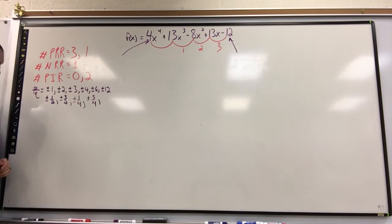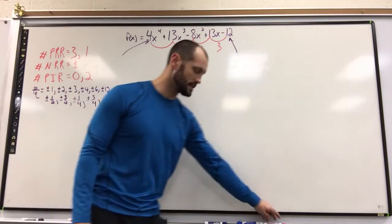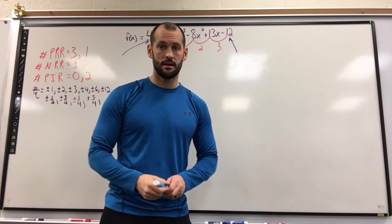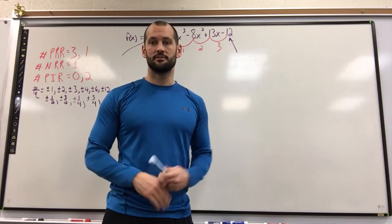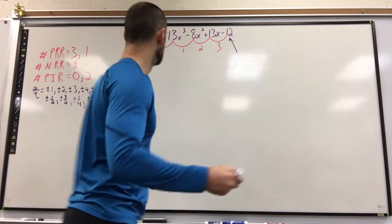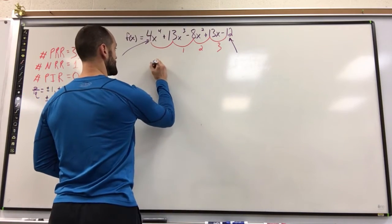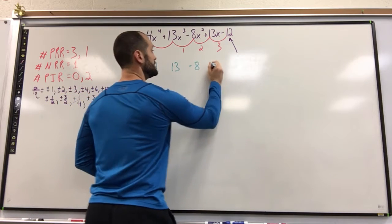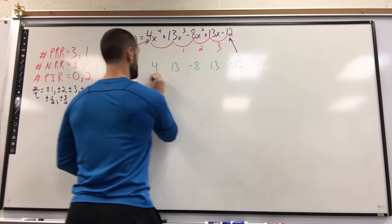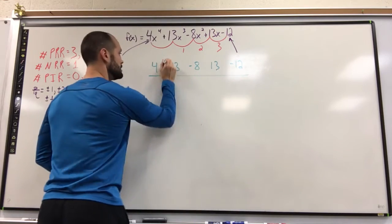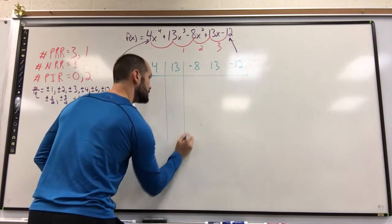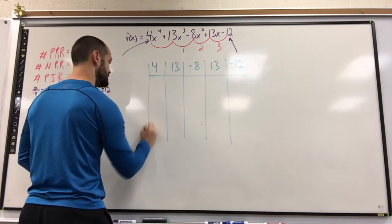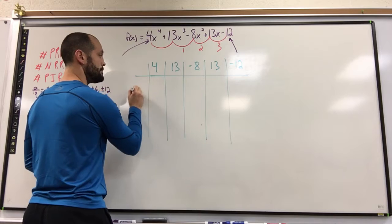So when I look at my P's and Q's, I'm only going to be running negatives. Now we showed this in class. The fastest way to find out if something's a root or not is to synthetically divide by it. Well, instead of rewriting the synthetic division every time, we're going to set up a chart. So I'm going to bring down my coefficients. I got a 4, a 13, negative 8, 13, negative 12.